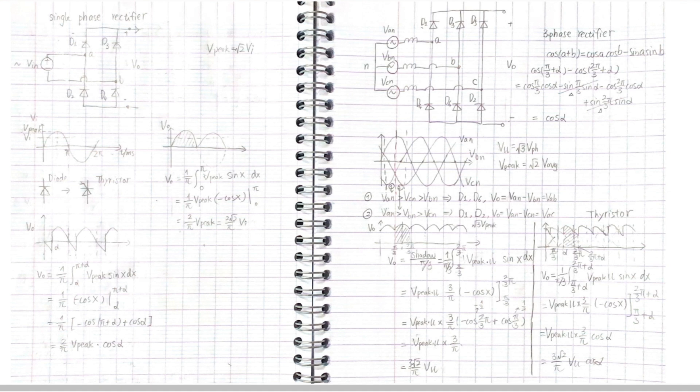A rectifier converts AC into DC. Here is a full wave rectifier single phase that uses four diodes in a bridge. Two diodes conduct for one half-cycle and the other two diodes conduct for another half-cycle.